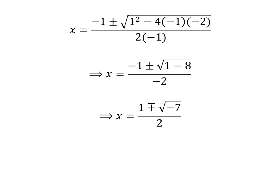Let us multiply the numerator and the denominator by common factor minus 1. So, x is equal to 1 minus or plus square root of minus 7 upon 2.